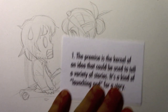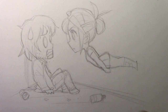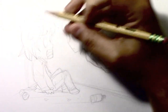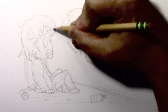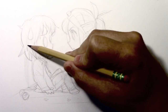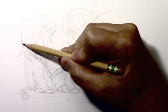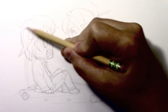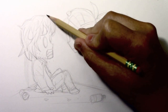Number one: before I get any further, let's start defining what a premise is. The premise is the kernel of an idea that could be used to tell a variety of stories — it's a kind of launching pad for a story. The premise of Brody's Ghost would be this idea of a young man finding that he has the ability to see ghosts, having his whole world turned upside down by one particular teenage ghost who comes into his life and drags him into the pursuit of a serial killer.